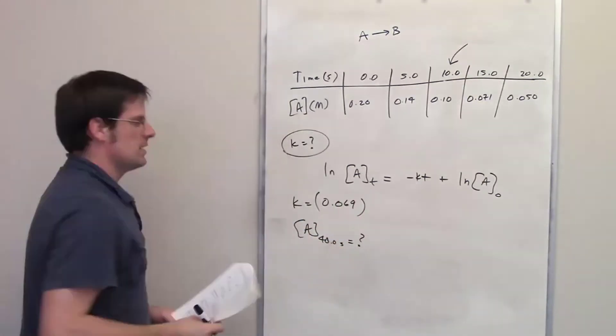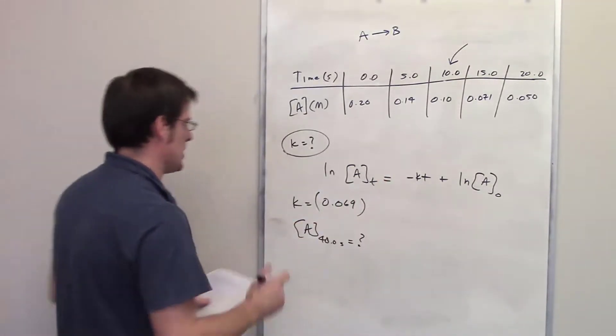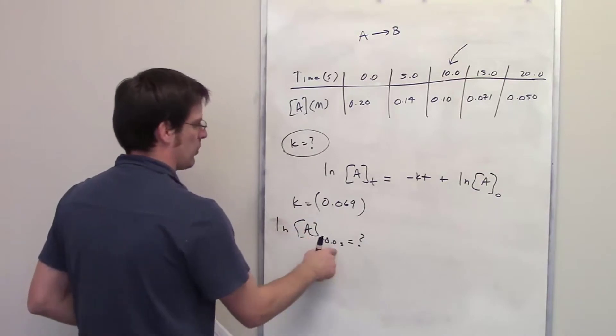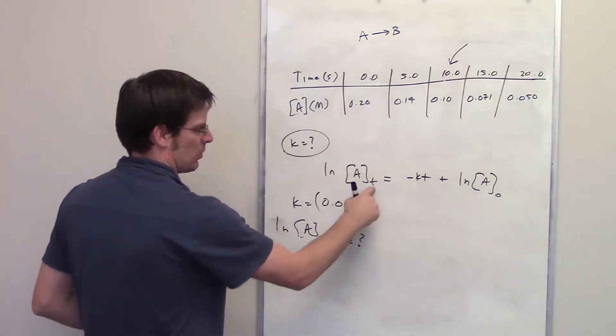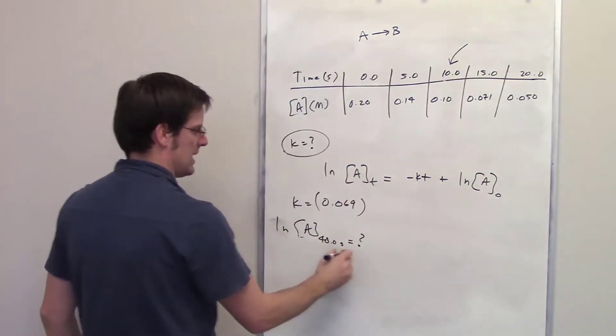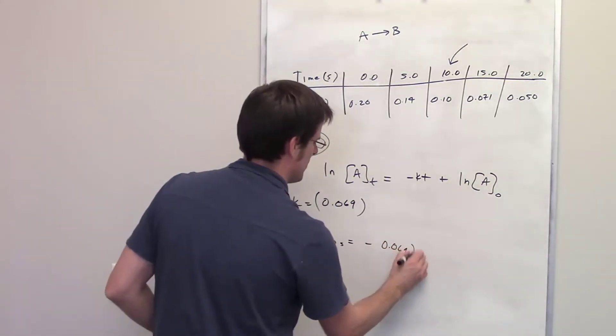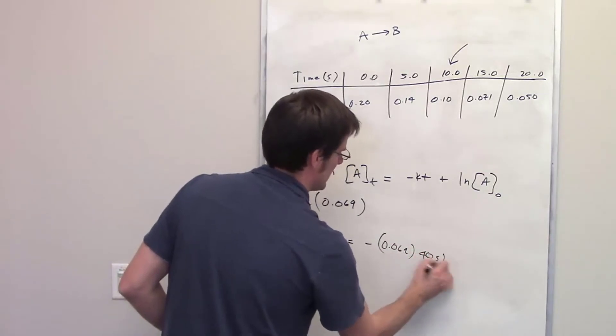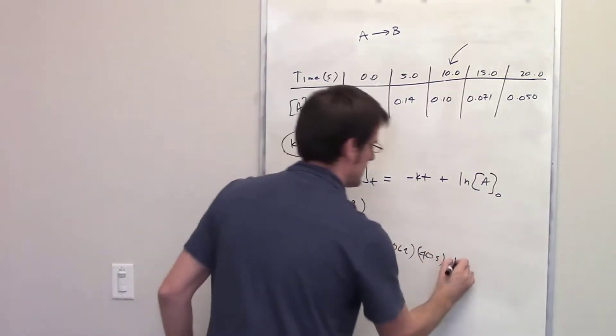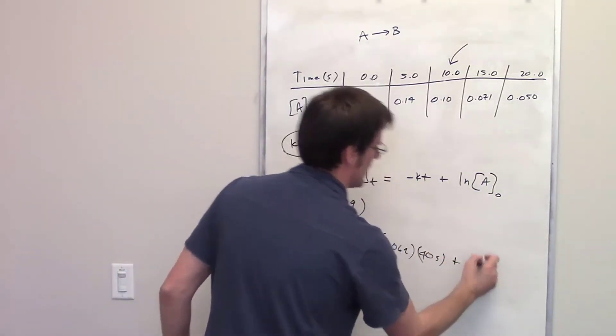but it's also true. So I do that by using this equation. The ln of A at 40 seconds, that's this term right here where I've replaced 40 here for t, is going to be equal to negative k, k is 0.069, multiplied by 40 seconds. That's our time t,